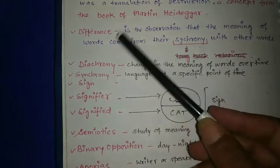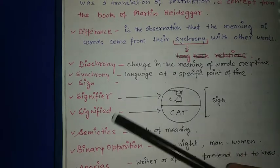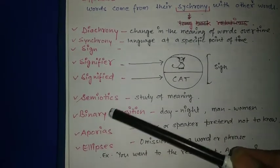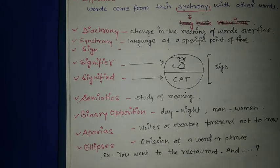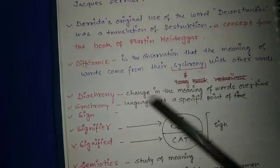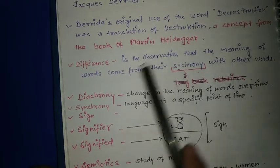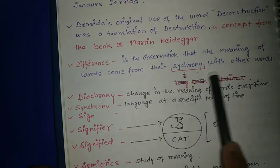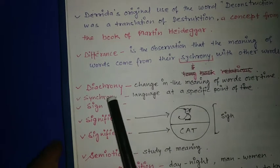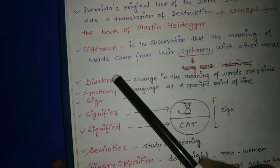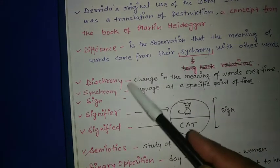The key concepts are: difference, diachrony, synchrony, sign, signifier, signified, semiotics, binary opposition, aporia, and ellipsis. First is difference - the observation that the meaning of words come from their synchrony with other words.